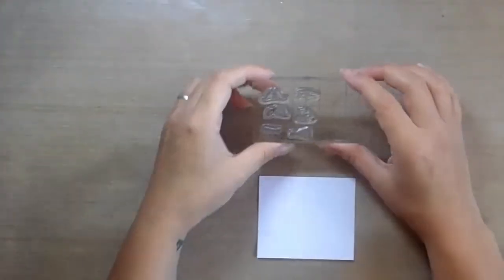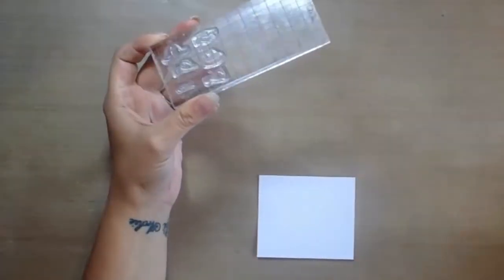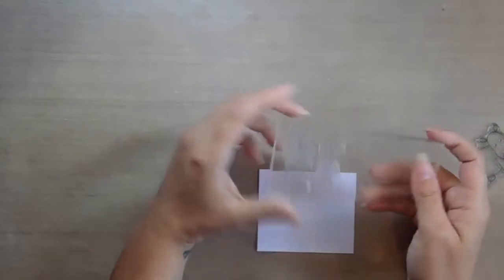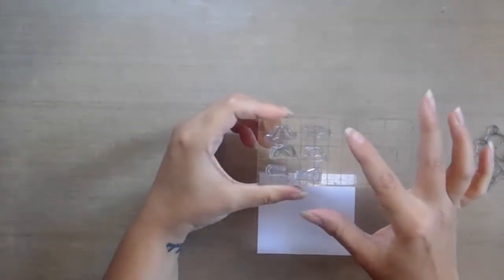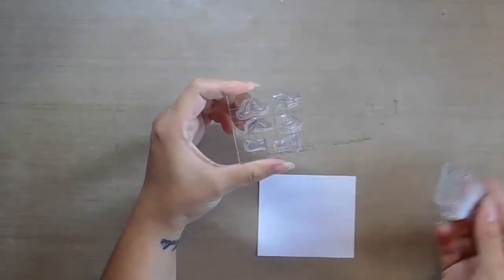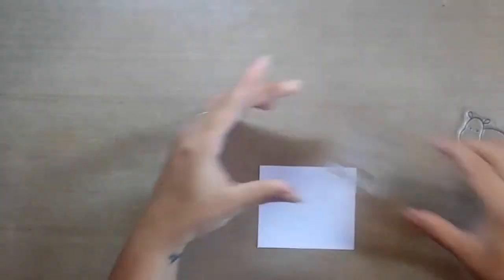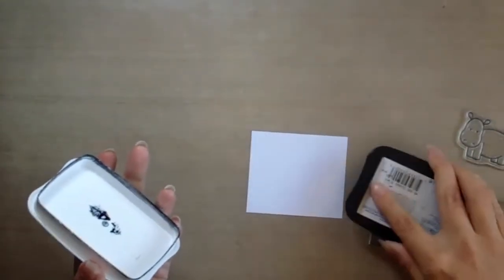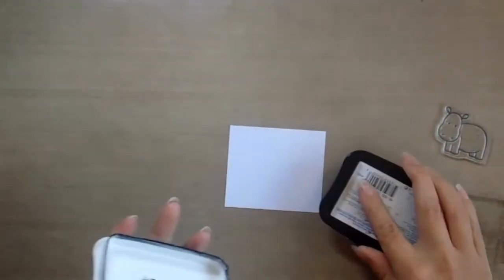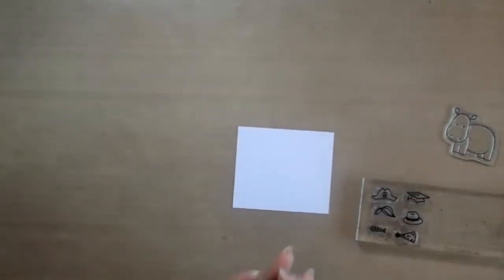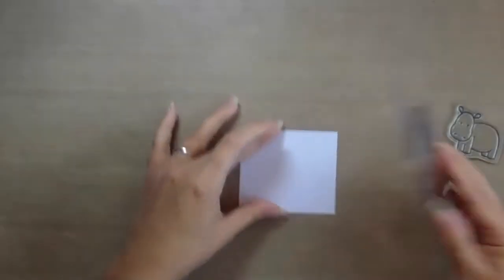My preferred method when adding accessories to animals is to fussy cut the accessories out and then add them to the stamped image of the character. To do this, you just take a piece of stamping card, ink up all of the accessories and stamp them.